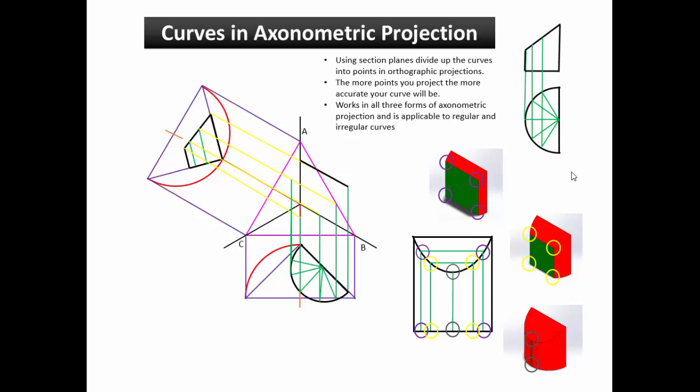If you have the location of a point in two orthographics, then by extending those points into pictorial you find the point in pictorial. This method is based on the same principle as the coordinates method for finding curves in isometric projection.